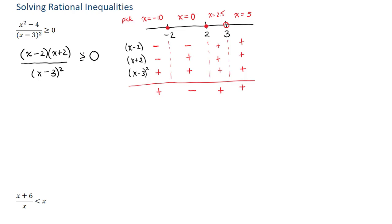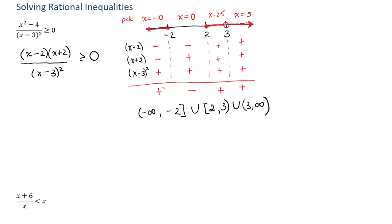Looking at our inequality sign, we want our rational expression to be greater than or equal to zero, so we want the intervals that are positive. That means we want anything less than negative 2, also between 2 and 3, and also greater than 3. In interval notation: from negative infinity to negative 2 with a square bracket (since negative 2 is included), union from 2 (closed bracket, since 2 can be included) to 3 with a round bracket, and then from 3 to infinity. That concludes the first example.